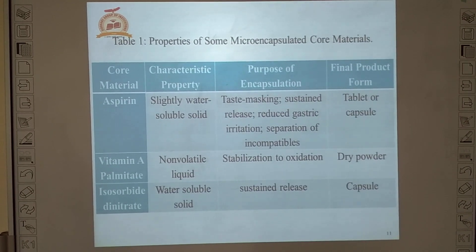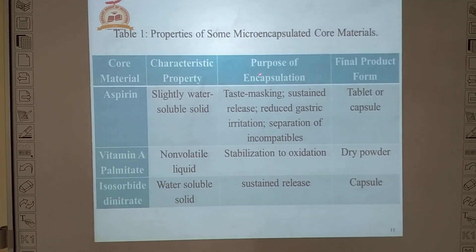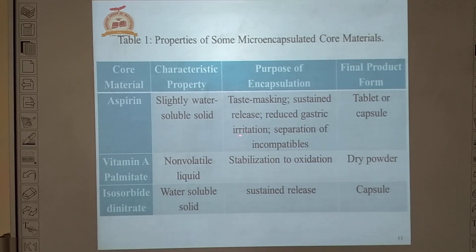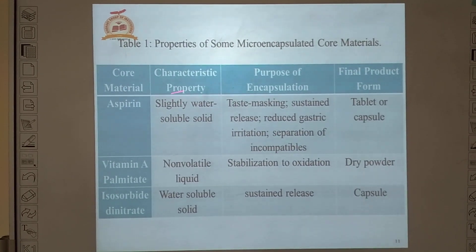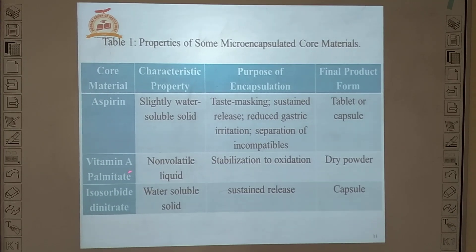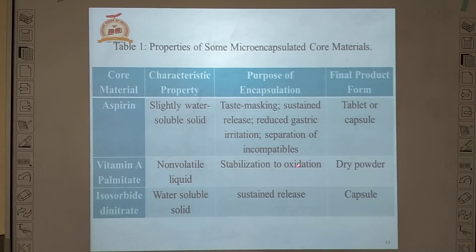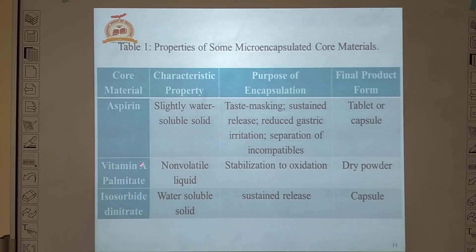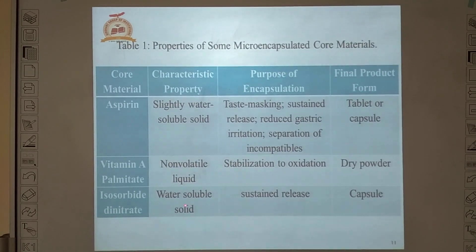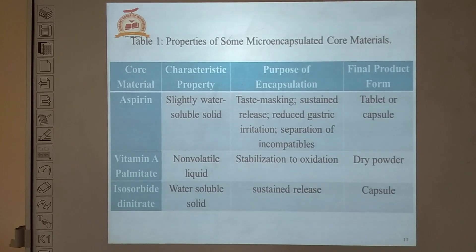Some marketed preparations: aspirin, which is a slightly water-soluble solid — the purpose of encapsulation is to mask the taste, convert it into a sustained release dosage form, and reduce GI irritation and incompatibilities, so we microencapsulate aspirin in the form of tablet or capsule. Vitamin A palmitate is a non-volatile liquid whose purpose of encapsulation is to stabilize it and prevent oxidation, converting it into dry powder form. Isosorbide dinitrate is a water-soluble solid that needs to be prepared in a sustained release dosage form, so it is microencapsulated in the form of a capsule.